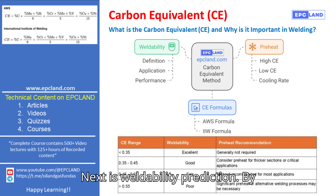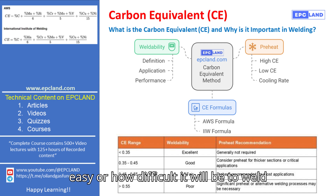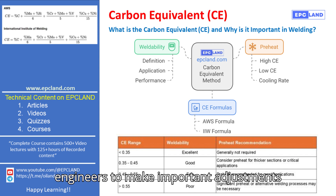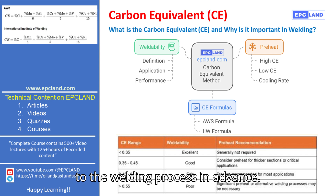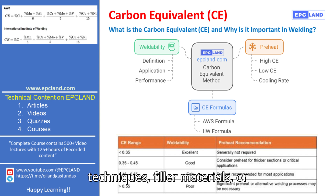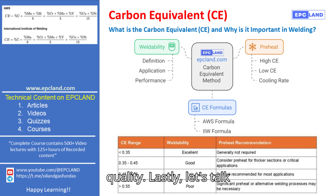Next is weldability prediction. By calculating the CE, we can predict how easy — or how difficult — it will be to weld a particular steel. This allows engineers to make important adjustments to the welding process in advance. For example, using different welding techniques, filler materials, or adjusting heat input can improve weld quality.